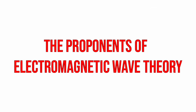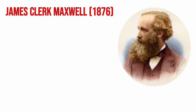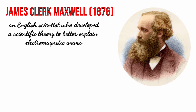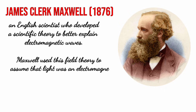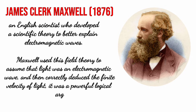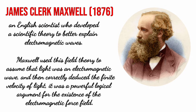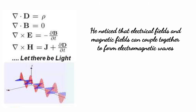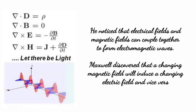The following prominent scientists made significant contributions in resolving how electromagnetic waves behave. Let's start with James Clerk Maxwell, an English scientist who developed a scientific theory to better explain electromagnetic waves. Maxwell used field theory to assume that light was an electromagnetic wave and correctly deduced the finite velocity of light. He noticed that electric fields and magnetic fields can be coupled together to form electromagnetic waves. Maxwell discovered that a changing magnetic field will induce a changing electric field and vice versa.